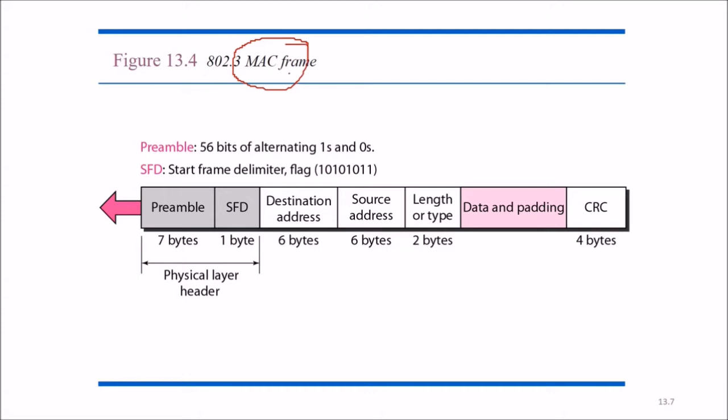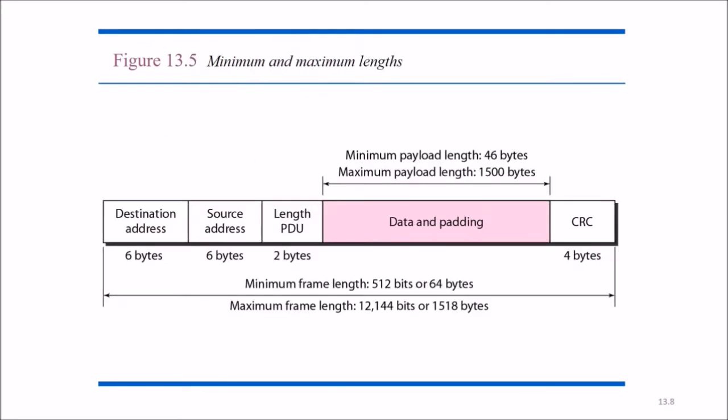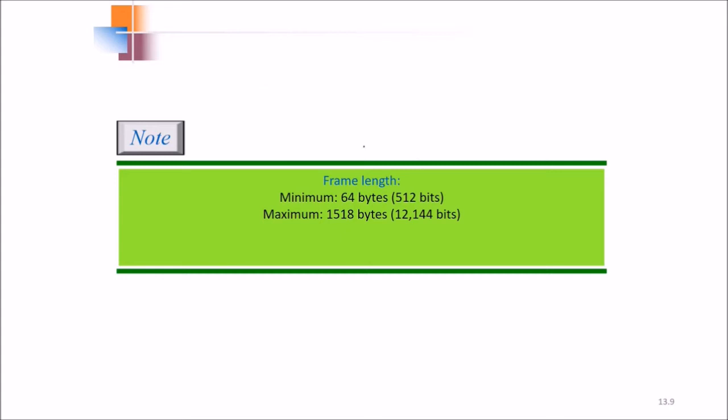This is the medium access control frame. The preamble is 56 bits of alternating 1s and 0s. Then we have SFD, the start frame delimiter. We have destination address, source address, length of time data and padding, and the cyclic redundancy code of 4 bytes. The minimum payload length for Ethernet is 46 bytes, maximum payload length is 1500 bytes. The minimum frame length is 512 bits or 64 bytes, and maximum frame length is 12,144 bits.